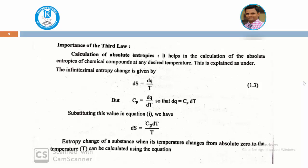We know that the change in entropy is given by ds = dq/T. We also know that heat capacity at constant pressure Cp = dq/dT, so by cross multiplication, dq = Cp·dT. Substituting the value of dq into the entropy equation ds = dq/T, we get ds = Cp·dT/T. This small change with respect to temperature can then be integrated.